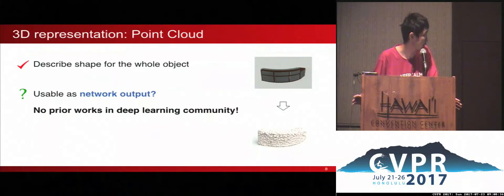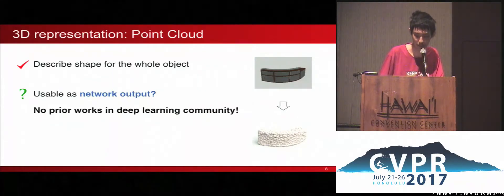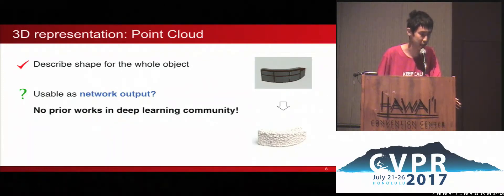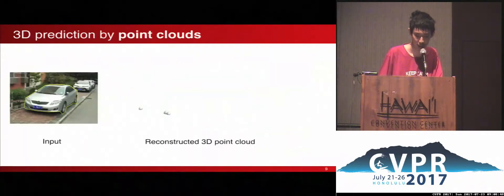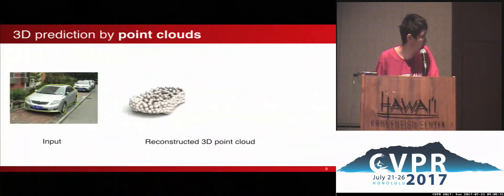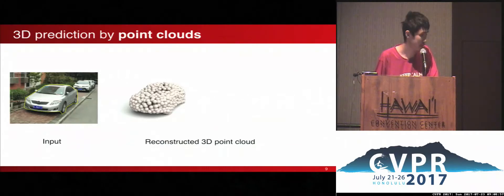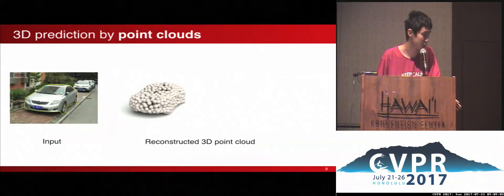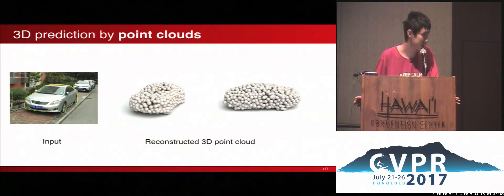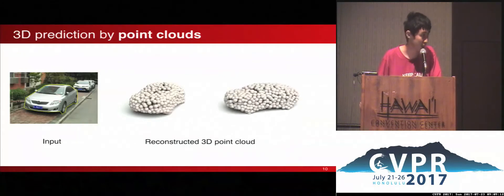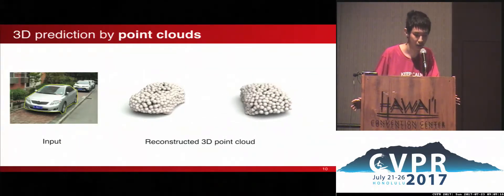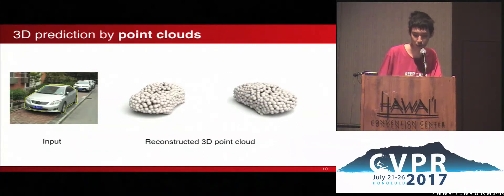Our solution is called a point cloud — an unordered point set of XYZ coordinates. Here is a random example of how it works. On the left is an input image of a car indicated by a segmentation mask, and on the right is the output of our neural network. It's a description of a 3D shape that covers both sides, including the invisible side. There are four wheels in the reconstruction results, even though only three of them are actually visible in the input image.